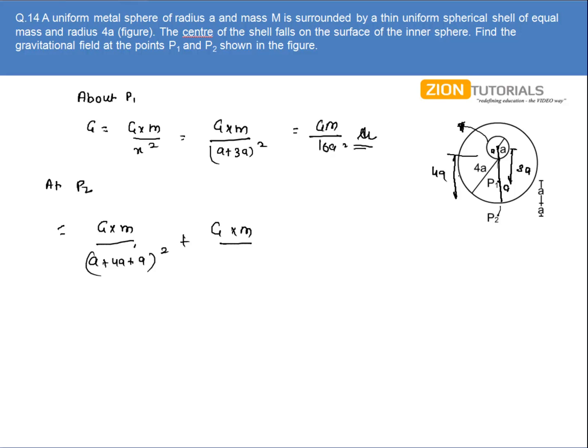The distance from the hollow sphere center is 4a + a, which is (5a)². So solving this I get Gm/36a² + Gm/25a², which comes out to be 61Gm/900a². That is the answer.